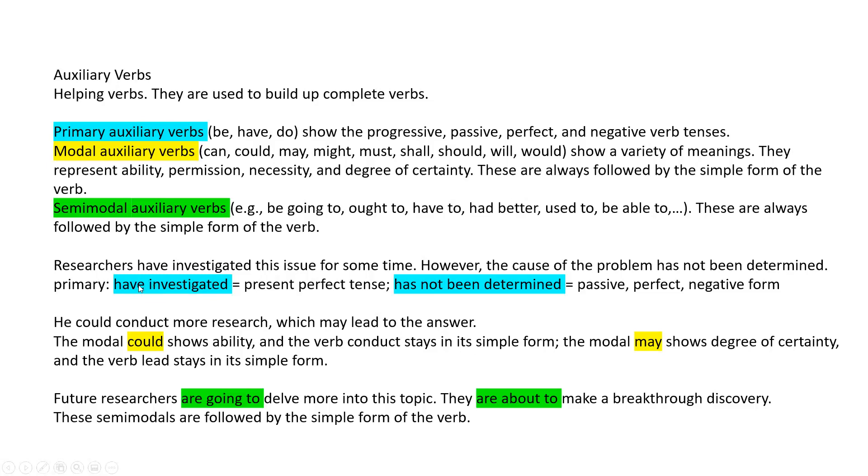Investigated - here in blue is a present perfect tense. And here you can see that have is a primary auxiliary verb to make the present perfect tense. Also you have here in yellow the modal auxiliary verbs like could, may. And here you have the semi-auxiliary verbs that are used to express, for example, future: are going to, or are about to. These are always followed by a simple form of the verb. Look, are going to, and then you have the simple verb. Are about to, and you have here a simple verb.